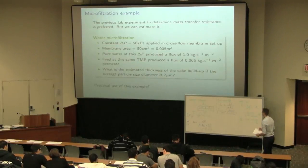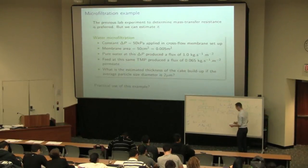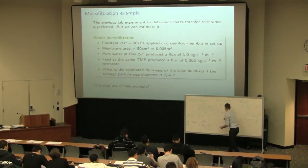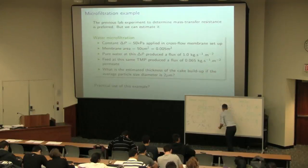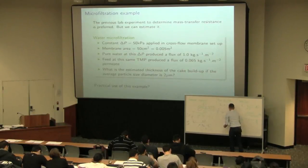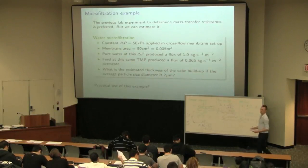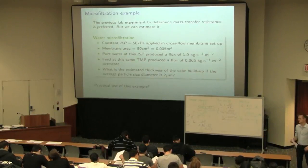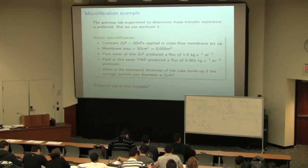And we can then estimate RmV. The resistance offered by the membrane, but we're using units this time for the flux expressed in its volumetric form. So if we rearrange that to calculate that resistance, we would get 5 times 10 to the 10. And this time the units are a little different because we're working with those resistance units.